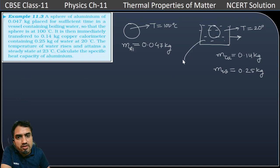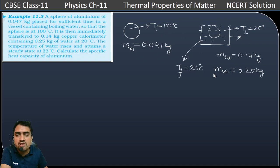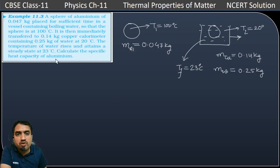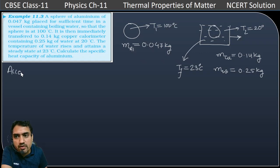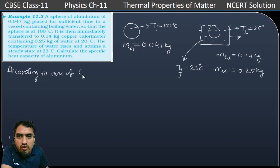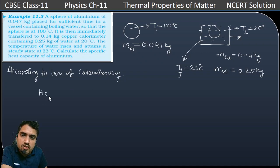So what will be the final temperature? The final temperature comes out to be 23 degree Celsius. According to the law of calorimetry, heat gain is equal to heat loss, which is based on the law of conservation of energy.